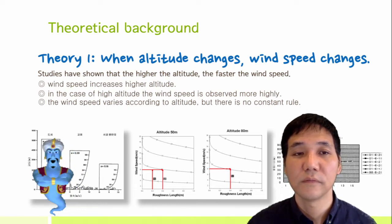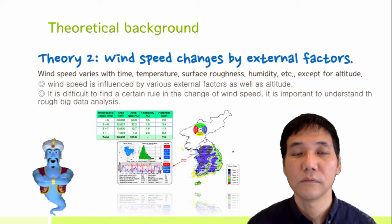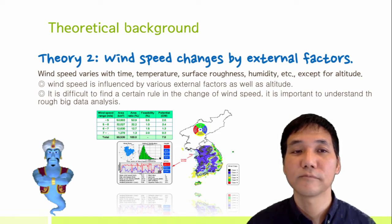Theory 1: When altitude changes, wind speed also changes. Studies have shown that the higher the altitude, the faster the wind speed. We can refer to articles showing that wind speed increases with higher altitude. In the case of high altitude, the wind speed is observed to be higher. The wind speed varies according to altitude, but there is no constant rule.